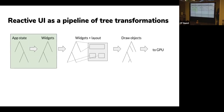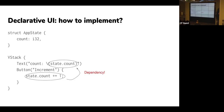This talk is going to focus almost entirely on the first arrow: the transformation from app state to widgets, and state modifications on those widgets. So looking at this running example — this is pseudocode, not any particular language — we've got a very simple widget hierarchy: a stack with a text and a button. We have behavior attached to that button that mutates the state, and when that state is mutated we want the view displaying the count to update magically.